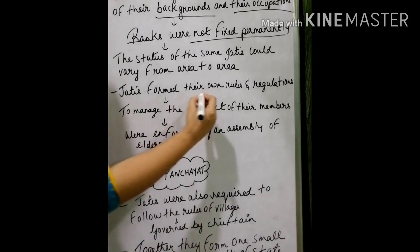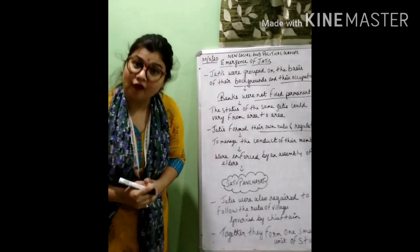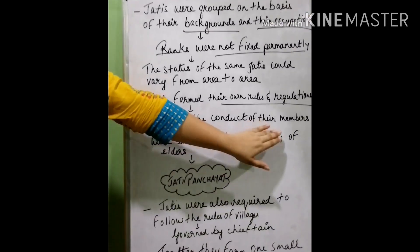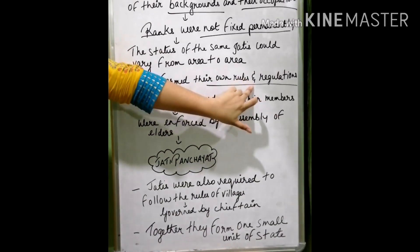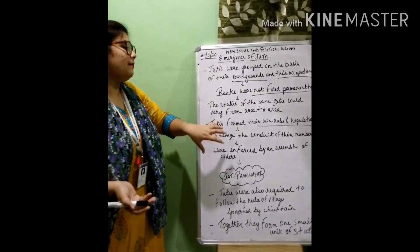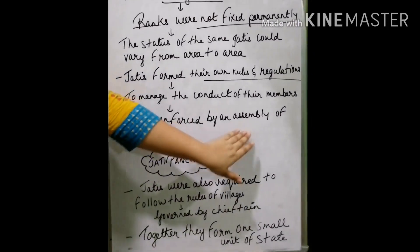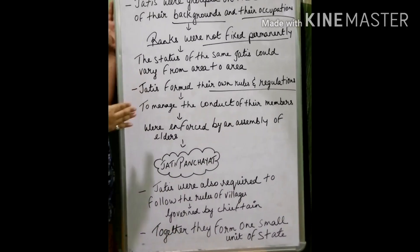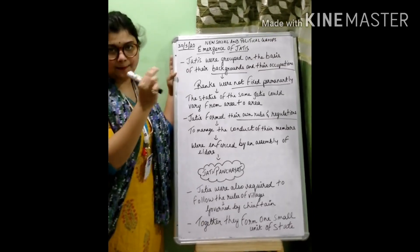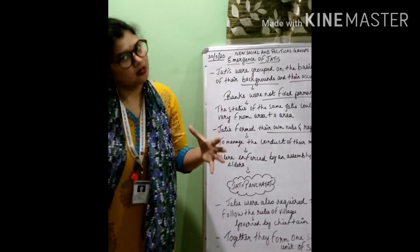Jatis formed their own rules and regulations to manage the conduct of their members. These subcastes used to form their own rules and regulations, and they were enforced by an assembly of elders. The elderly people of these particular jatis or subcastes used to look after the whole system.